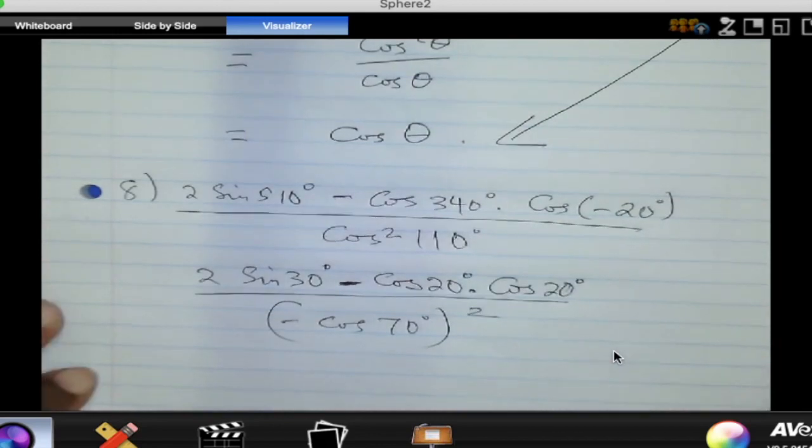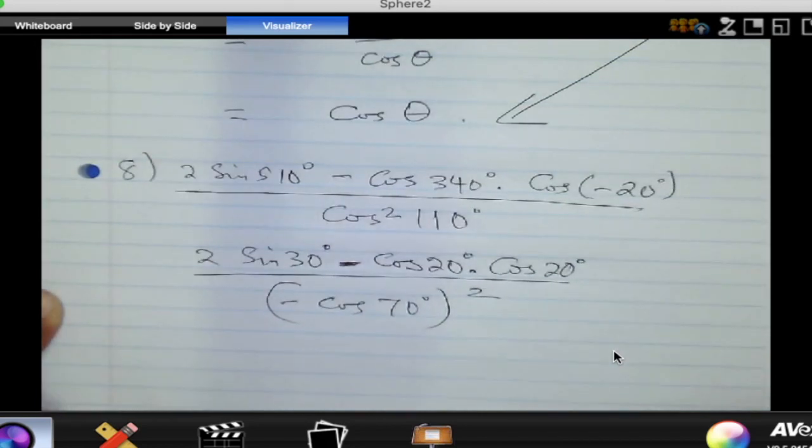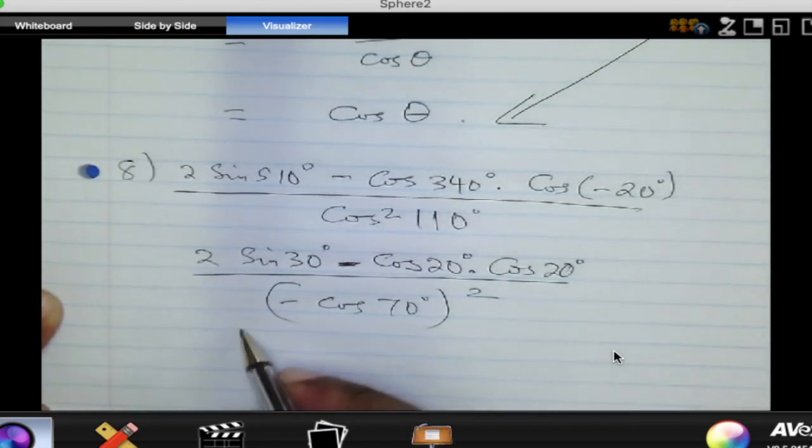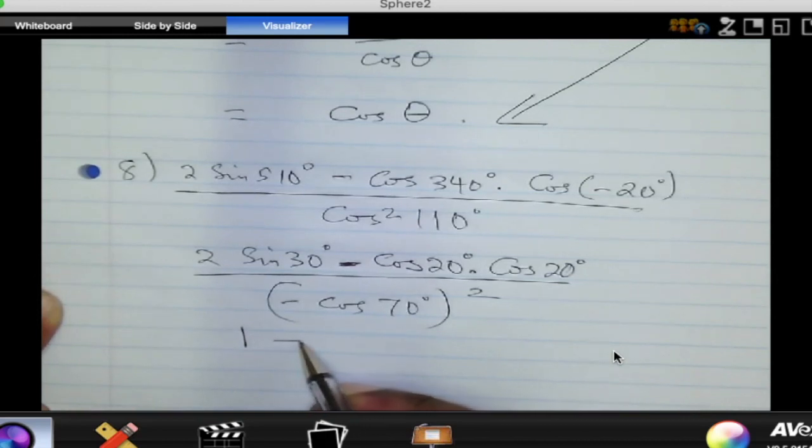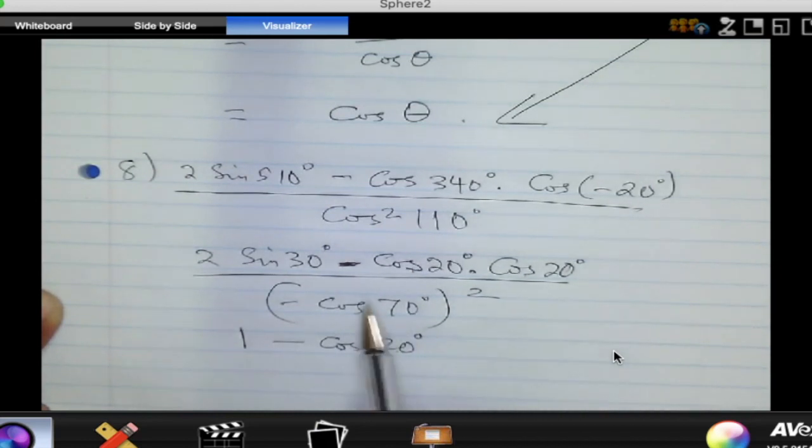So, in this case, 30 degrees is a special angle. What is sine of 30 degrees? All right. So, it's 1 over 2. So, 2 multiplied by sine of 30 degrees should be 1, right? Do you see that that numerator then becomes 1 subtract cosine squared of 20? Because that is cosine of 20 times cosine of 20, which will give us cosine squared of 20, right?